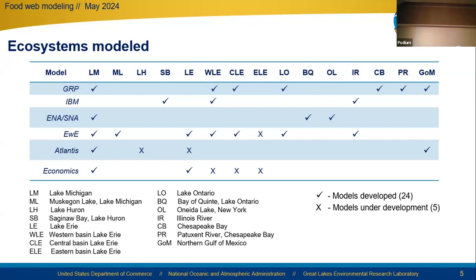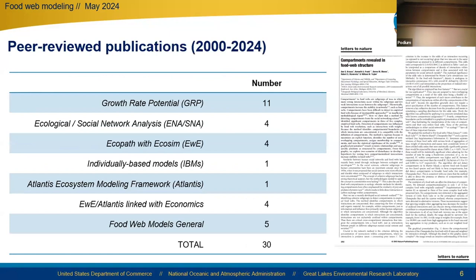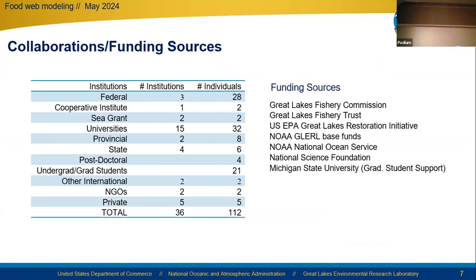This has tallied to a count of 24 models developed and five more currently in development. These efforts have also led to a total of 30 peer-reviewed publications spanning across these modeling categories. Many individuals — approximately 112, spanning around 36 institutions — have either provided data for our model developments or worked directly with us. Funding sources have varied, ranging from the Great Lakes Fisheries Commission, Great Lakes Fisheries Trust, EPA's Great Lakes Restoration Initiative, NOAA-NOS, the National Science Foundation, academic contributions from universities for student support, and federal-based funds.